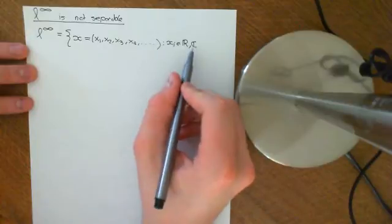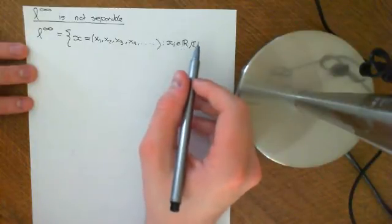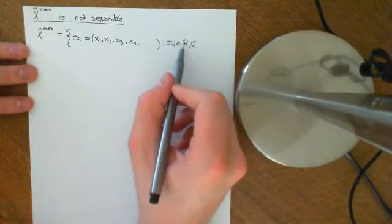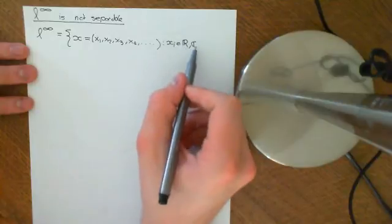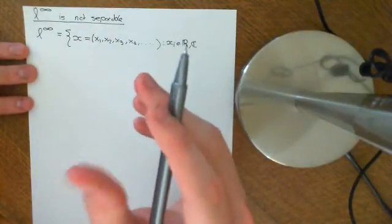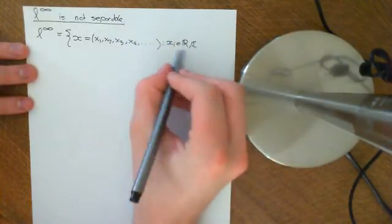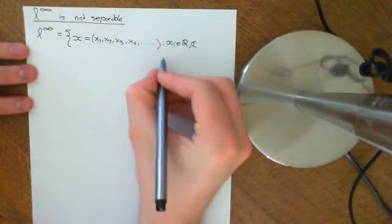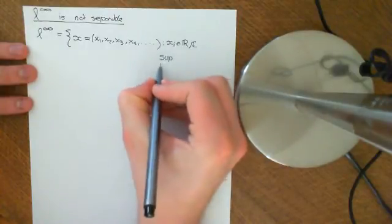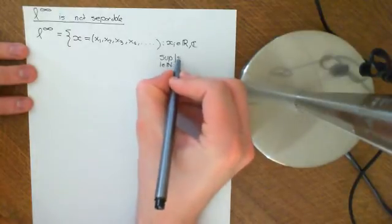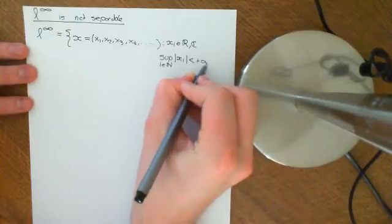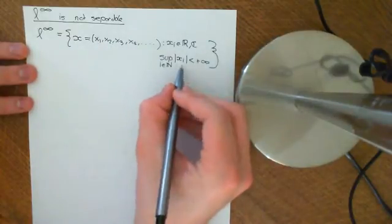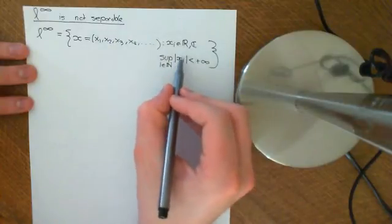For full generality we'll work with complex numbers, since the real numbers are a subset of the complex numbers. Since what we're trying to prove is that L-infinity is not separable, we'll keep our arguments general so as to encapsulate both cases at the same time. The condition is that the supremum over i in the natural numbers of the modulus of x_i is finite — that is, the supremum of all terms of the sequence is less than plus infinity.